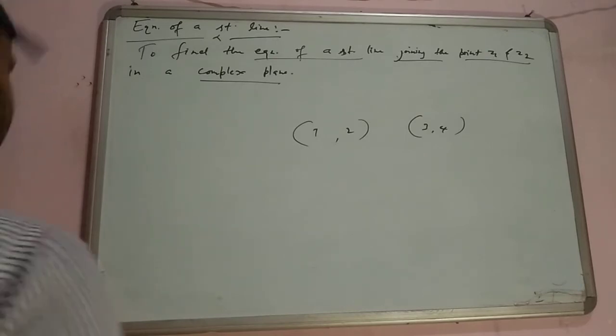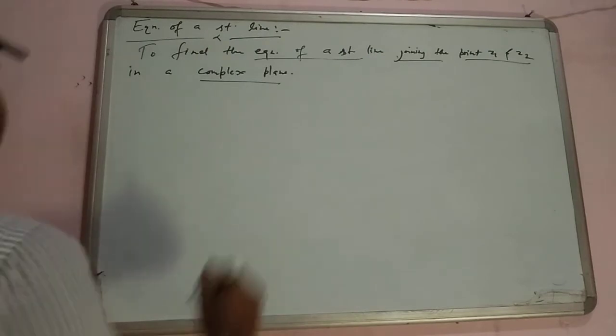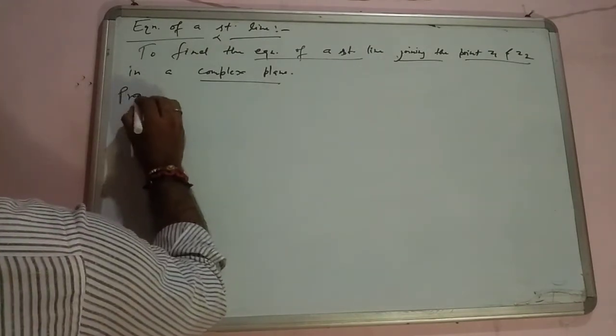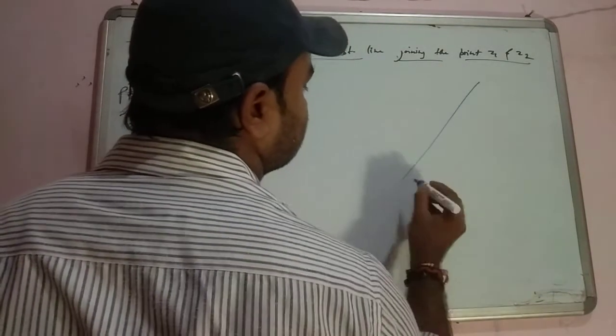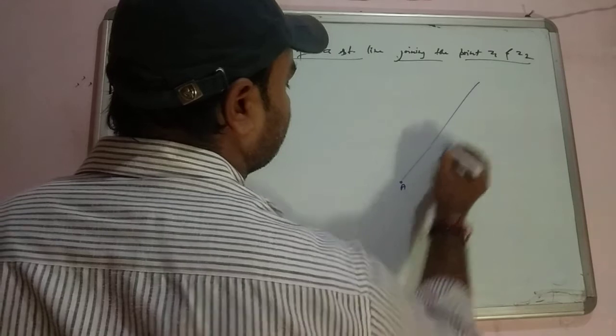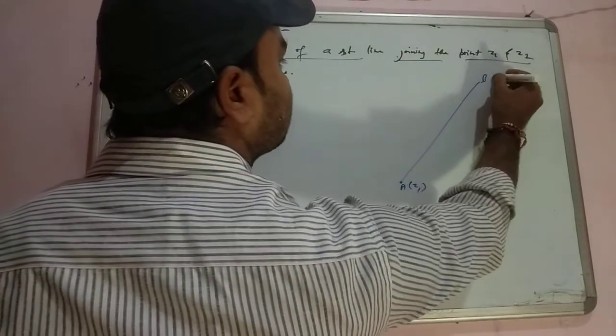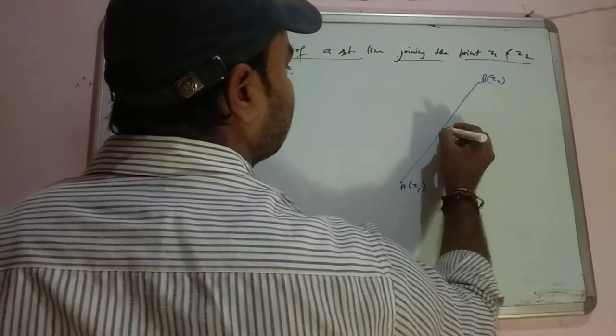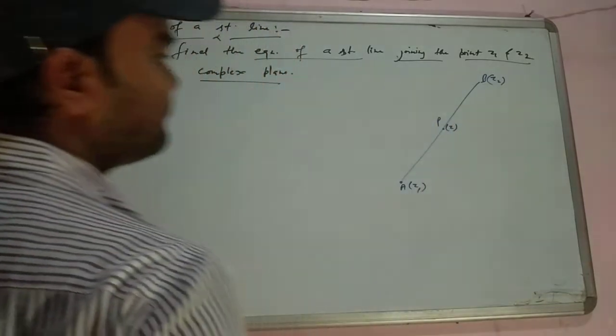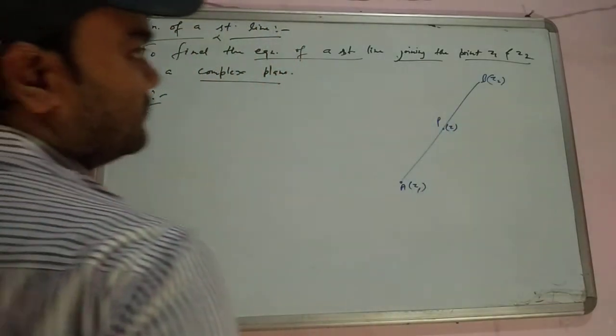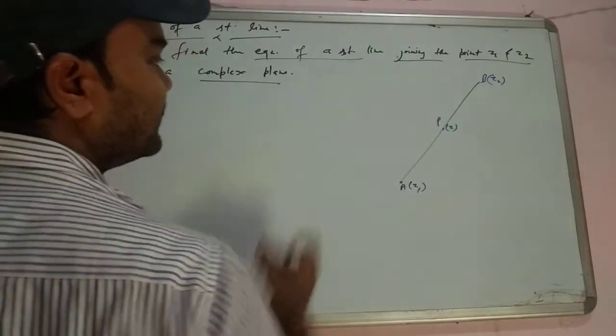Suppose this is a straight line A and B, this is at z1, this is at z2, suppose P is a point on the line at point z. So here we suppose P is on the line at point z.